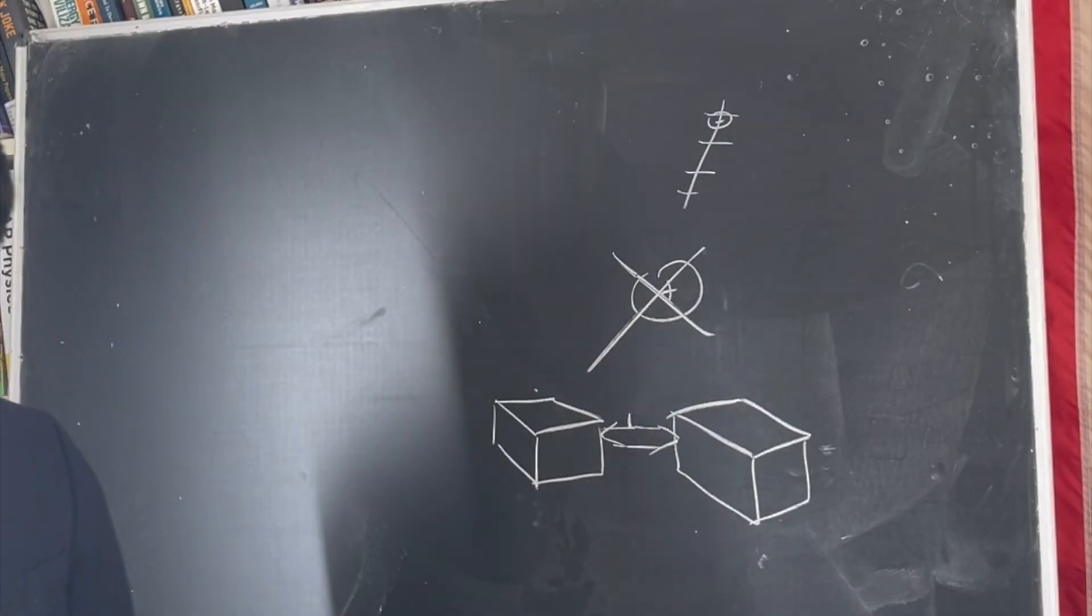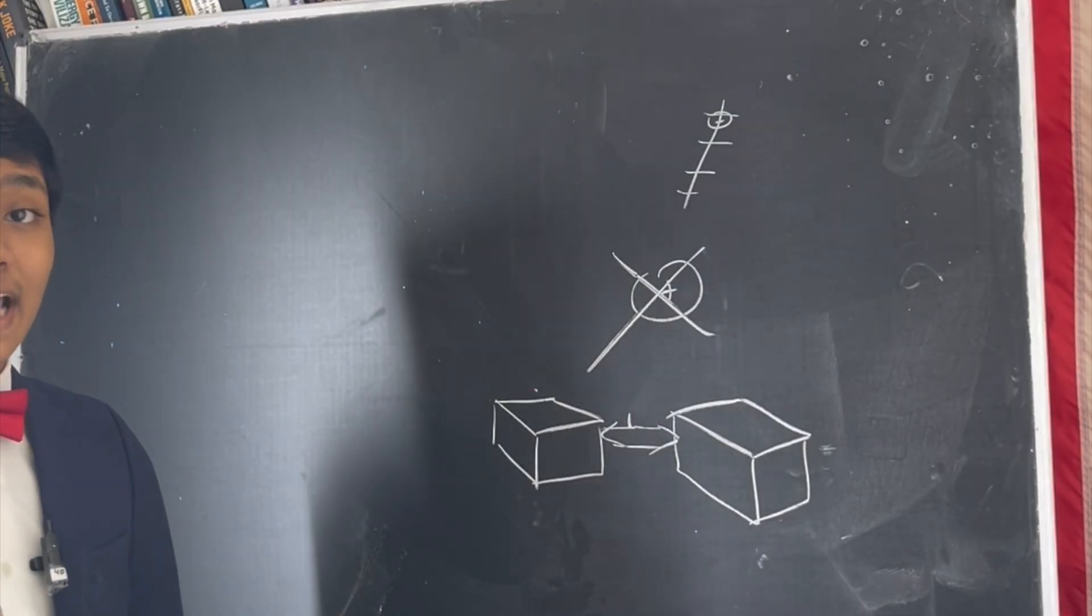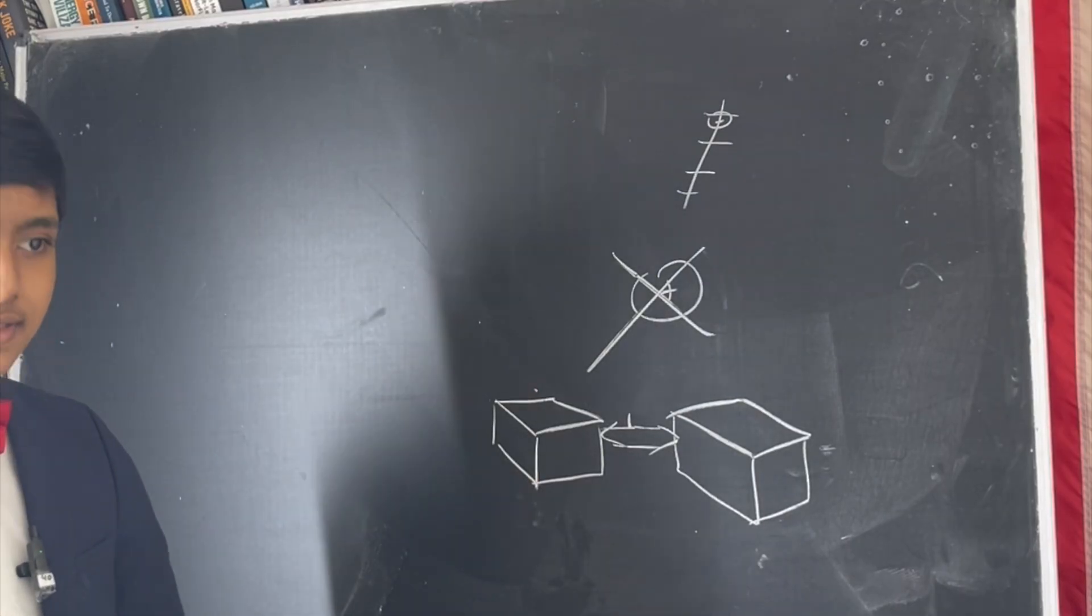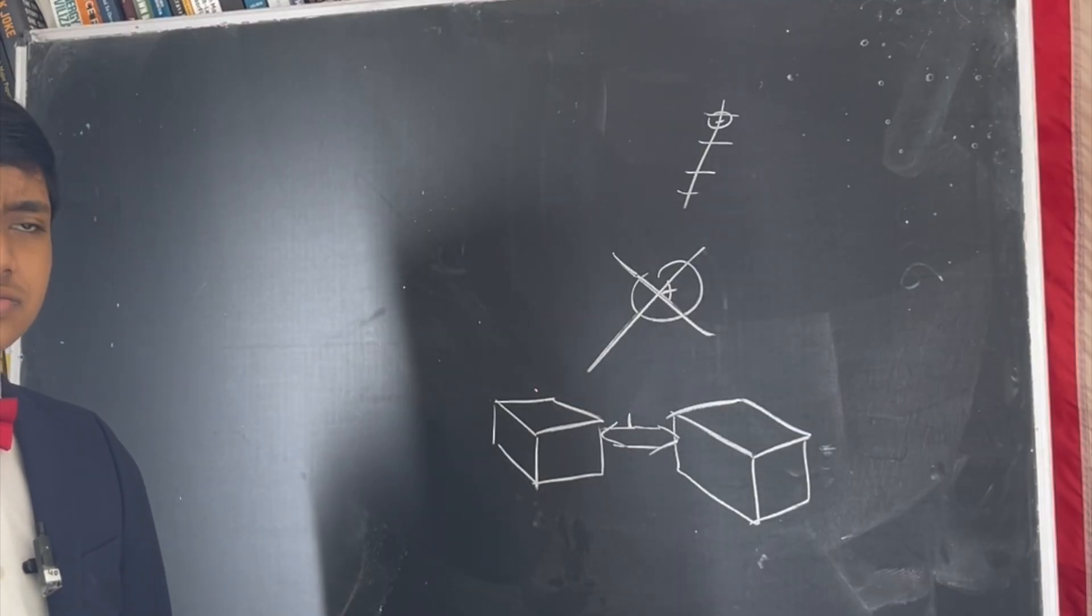You will never find two classical objects that are exactly the same, because that would require them to be in the exact same position, and with the exact same orientation, and mass, and density. At that point, it's just comparing an object to itself.